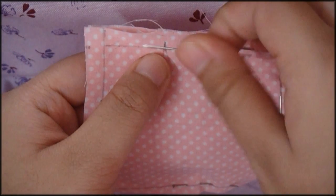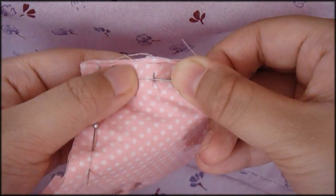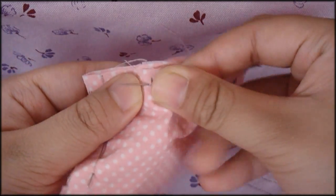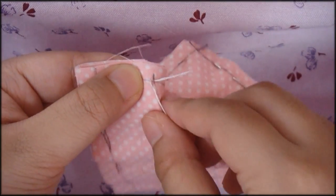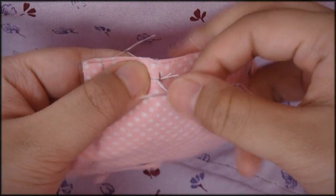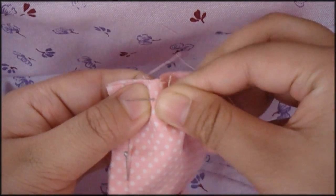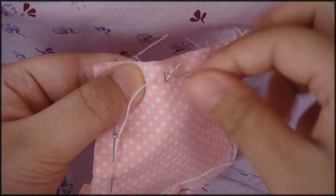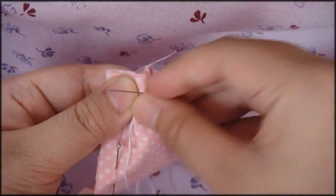We're going to be using running stitch. This is a stitch that basically goes in and out and it's a pretty fast stitch. So put your needle in at the starting point and bring it out a little bit further on. You want to make tiny even stitches as much as possible. So in and out and then in and out.